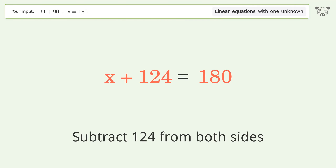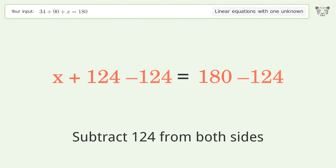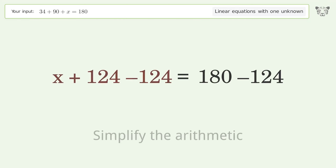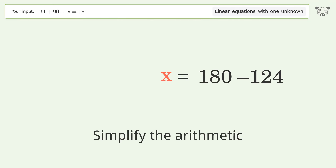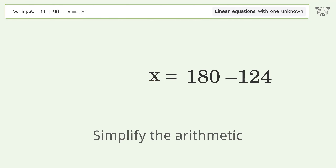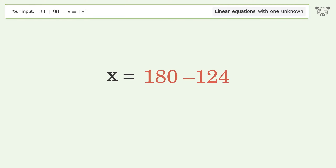Group all constants on the right side of the equation. Subtract 124 from both sides. Simplify the arithmetic.